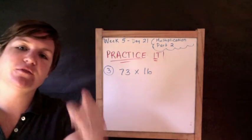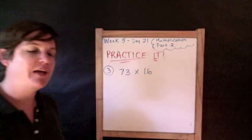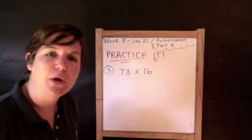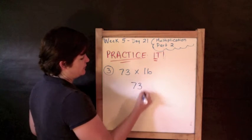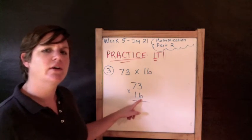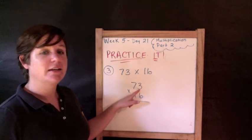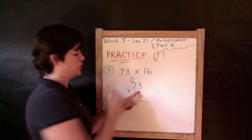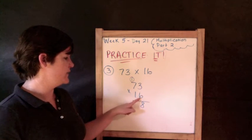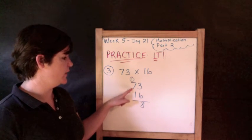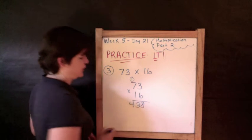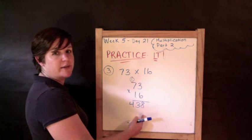You should have tried number 3 on your own — now let's check it together. We have 73 times 16. First step: write it vertically, 73 on top, 16 below it. Start with 6 and do 6 times 3, which is 18. Put a 1 up top, circle it, and the 8 comes down. Now do 6 times 7, which is 42, and 42 plus 1 is 43. What do I put in the 1's place of my second product?